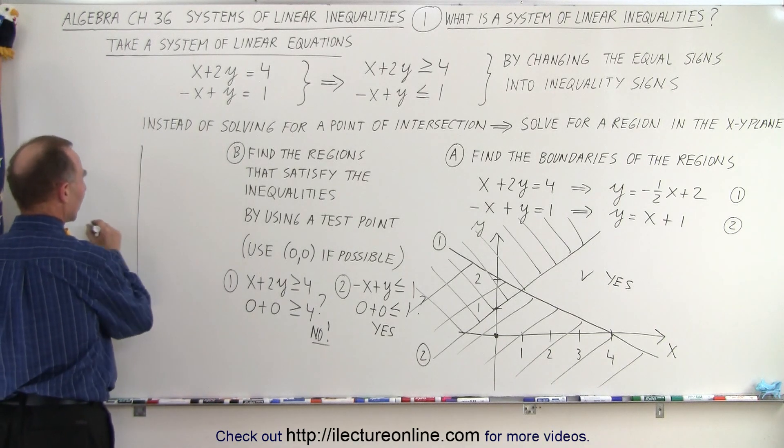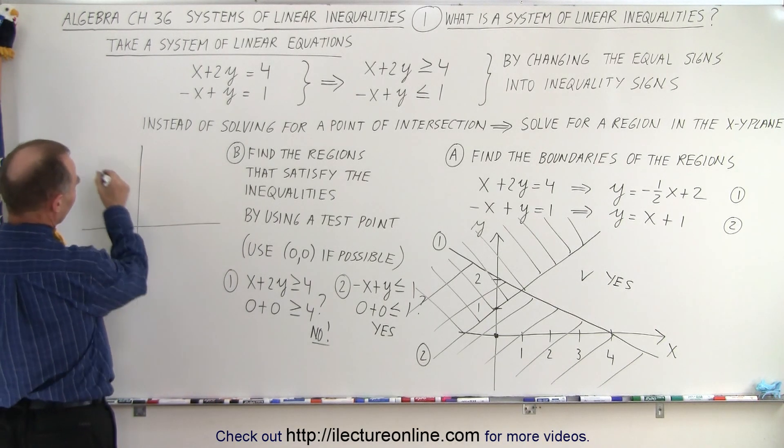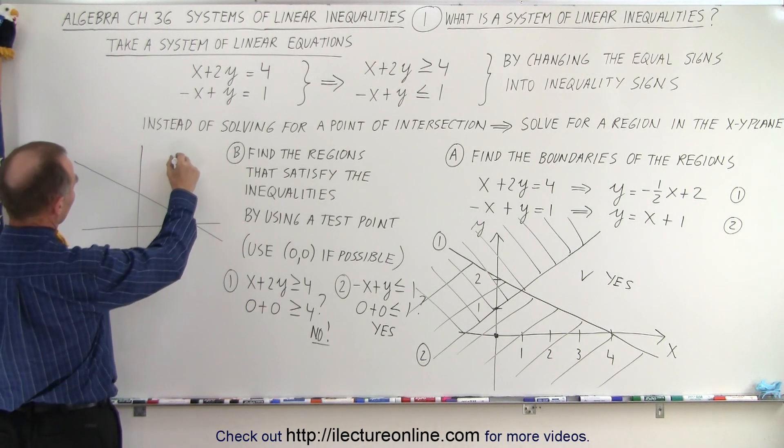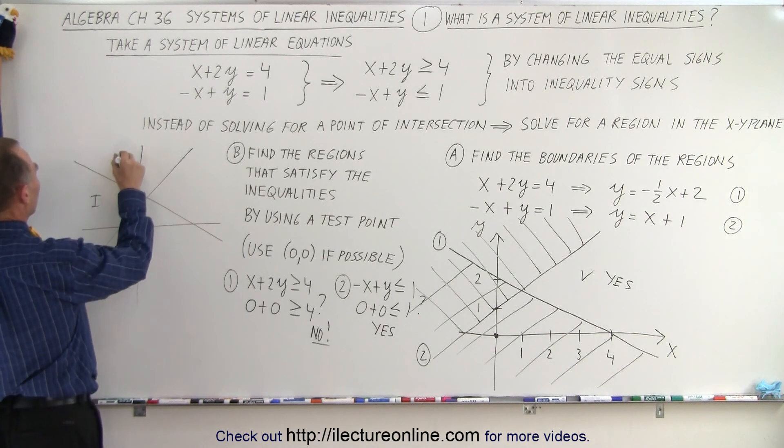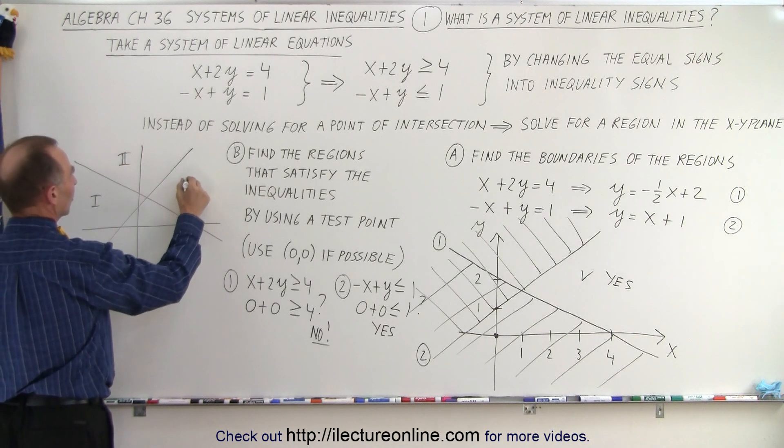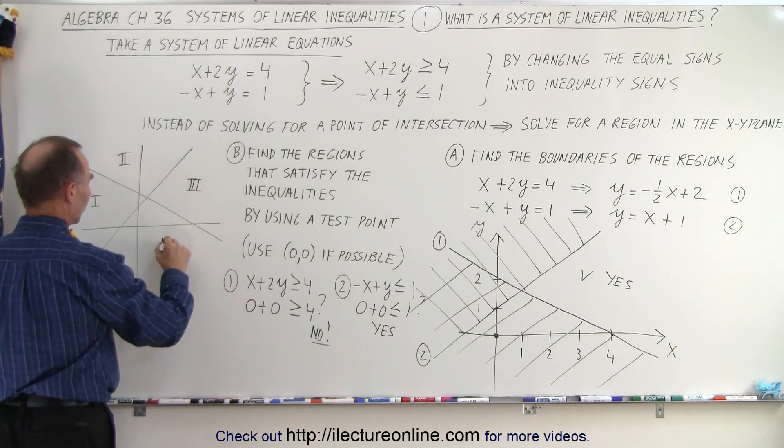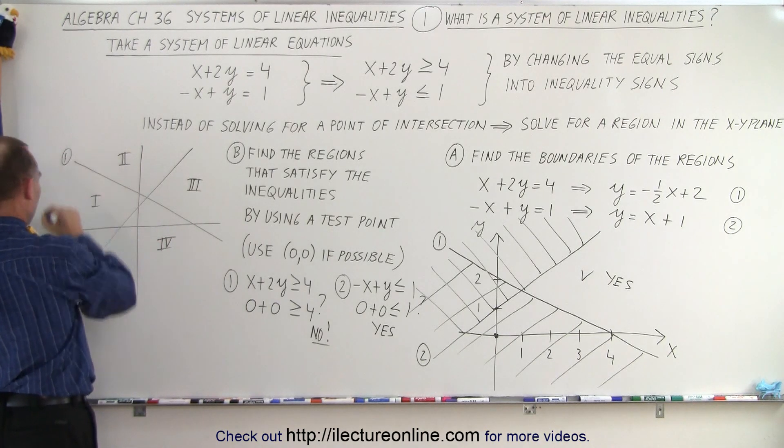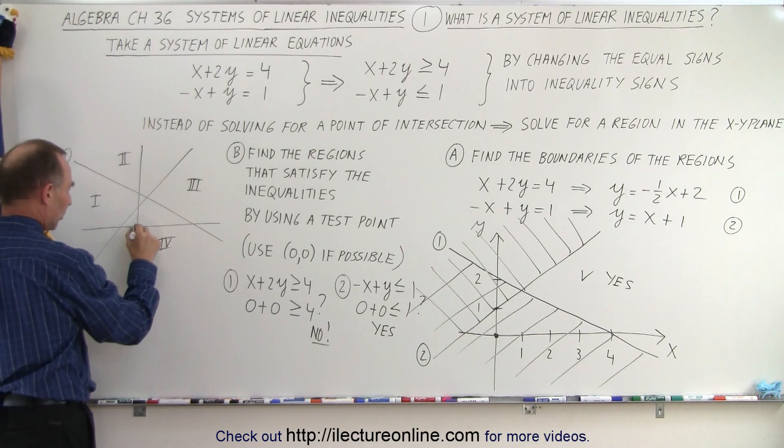Let's redraw the two lines, roughly. So we have one line that went like this and the other line that went like this. So again, we have four regions, region number one, region number two, region number three, and region number four. And we had line number one and we had line number two and we picked the test point right here.